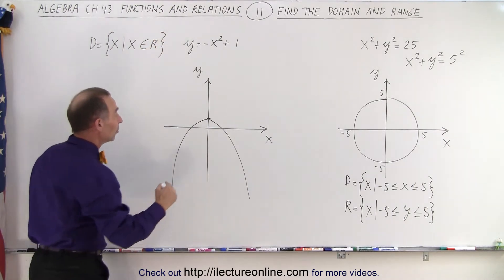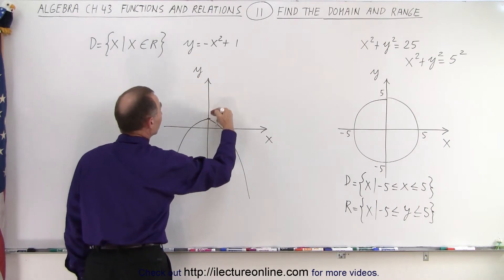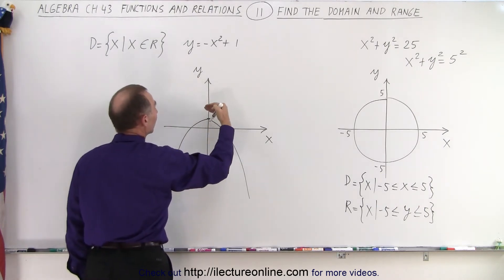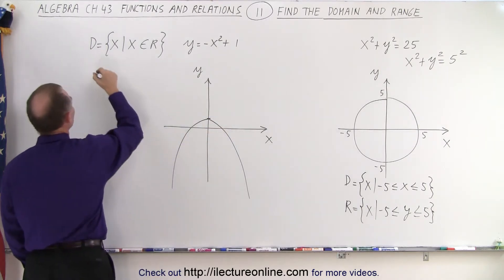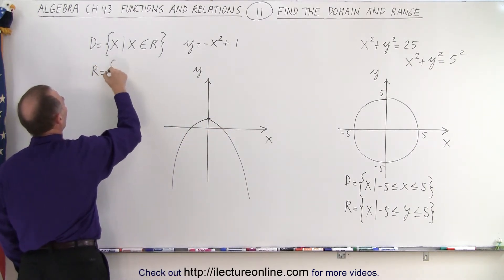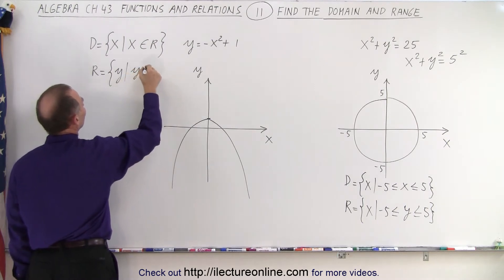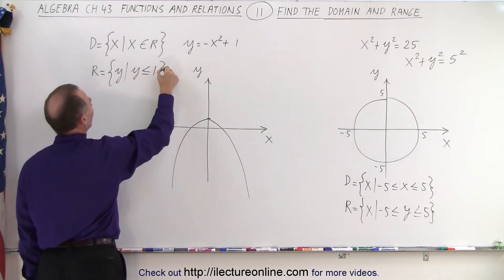In the y direction however you can see that nothing can be larger than the positive 1. So that means that all the y values will be 1 or less. That means the range is equal to all the values y such that y is less than or equal to a positive 1.